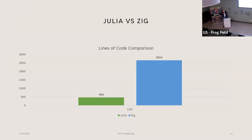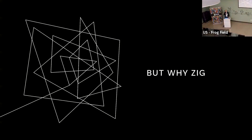Before I started using ZIG, I actually wrote a trial program. I initially wrote it in Julia, then I rewrote it in ZIG, and this slide shows the difference in lines of code between the two. I chose both languages because they were both new to me — I had never used Julia or ZIG before. It's not to tell you which one is better or worse; it just tells you the effort I needed to put in to write the same program and achieve feature parity between the two.